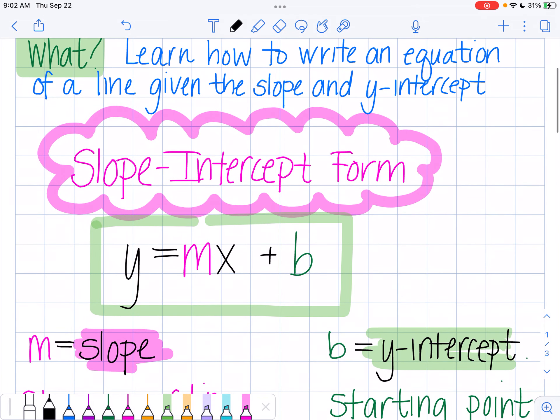There are three different kinds of equations of a line. There's slope-intercept form, which is what we're going to talk about today, but there's also point-slope form or standard form. We're going to focus on the slope-intercept form today.